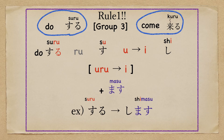Rule number 1: Group 3 has two verbs — 'do' suru, and 'come' kuru. First, throw away 'ru'. Second, 'u' changes to 'i'. So: suru → shimasu.